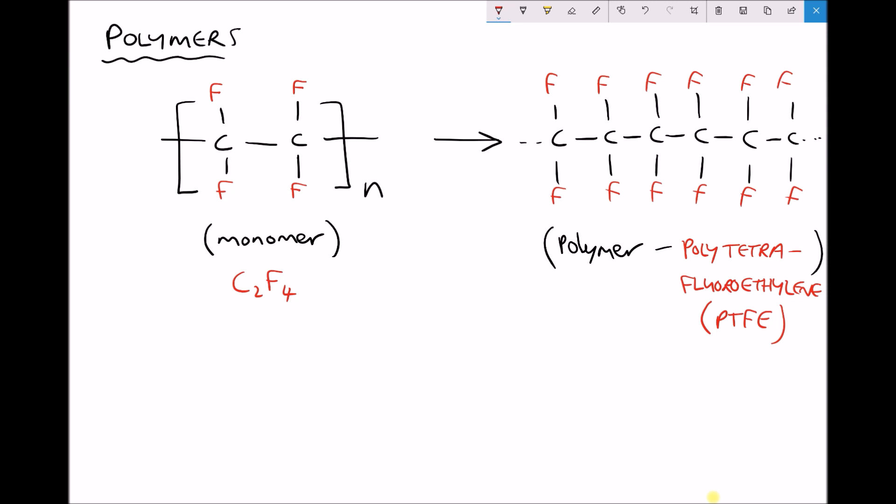If we look at the polymer on the right hand side we see every carbon atom joined to two other carbon atoms forming the backbone and then also joined to two fluorine atoms. The name of this polymer is slightly longer, polytetrafluoroethylene. But where this comes from: poly means many, tetra means four, fluoro stands for fluorine, and again we have ethylene, polytetrafluoroethylene.